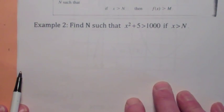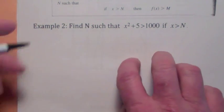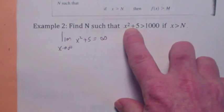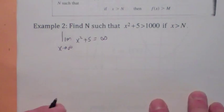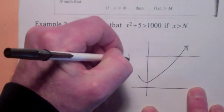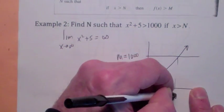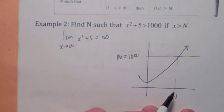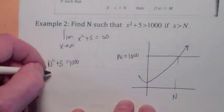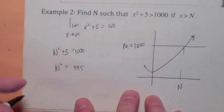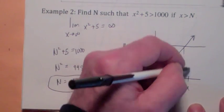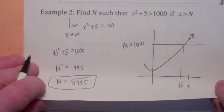The limit as x goes to infinity of f(x) equals infinity means: no matter what arbitrarily large positive number M you have, there is an N on the x-axis so that if x is beyond that value of N, all the y values are above M. For the example, the limit as x goes to infinity of x² + 5 equals infinity. With M = 1,000, f(N) must equal 1,000, so N² + 5 = 1,000, giving N² = 995. We want the positive square root of 995. When x is greater than that, the y value will be above 1,000.